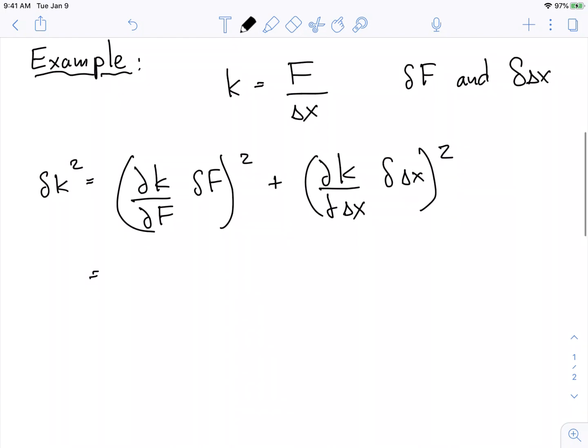And so this is equal to, well what's the derivative of k with respect to f? Well, that's one over delta x. And the derivative or the uncertainty in f is just something we measure, we know. So that's equal to that.